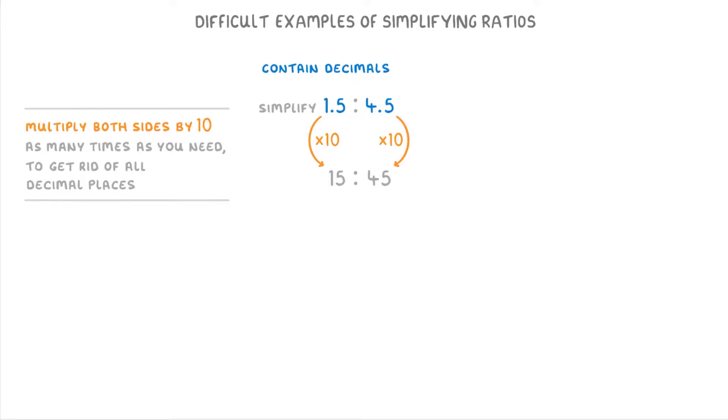And now that they're both whole numbers, we can just simplify it like any other ratio. So you could divide both sides by 5 to get 3 to 9, and then both sides by 3 to get 1 to 3. Or if you knew that 15 and 45 are both divisible by 15, you could have just done it in one single step by dividing both sides by 15 to get 1 to 3 straight away.